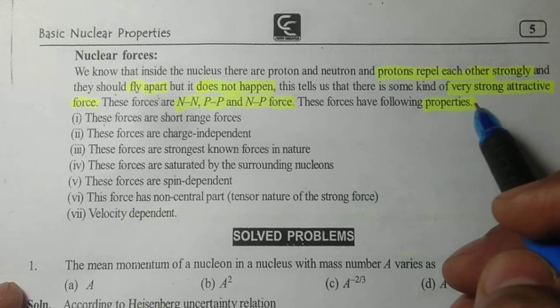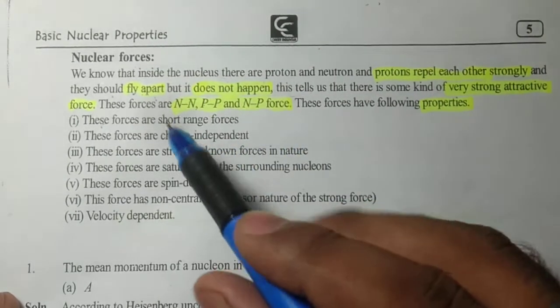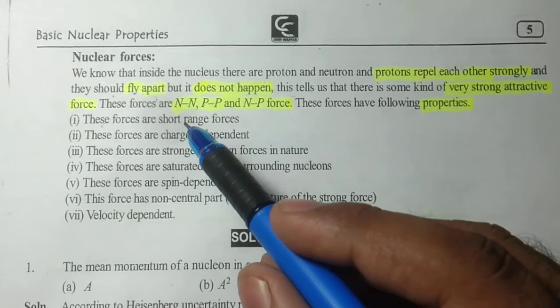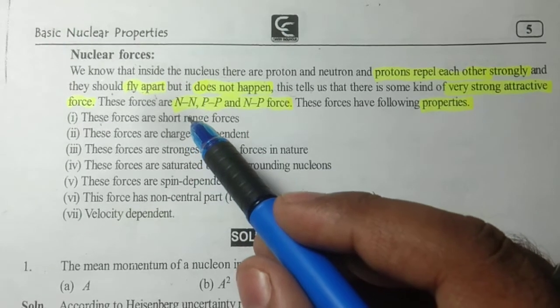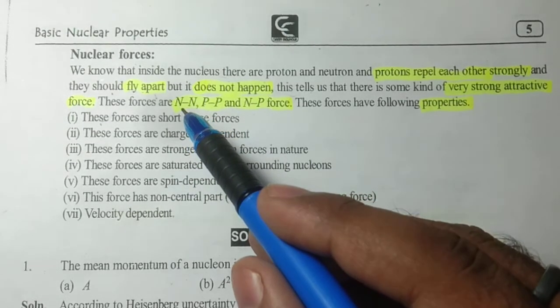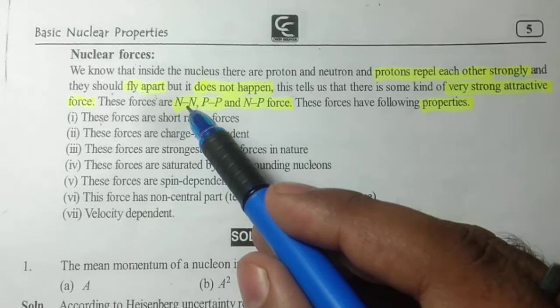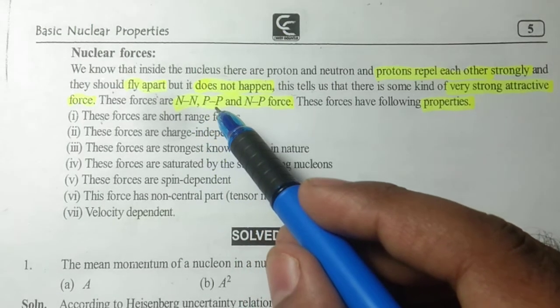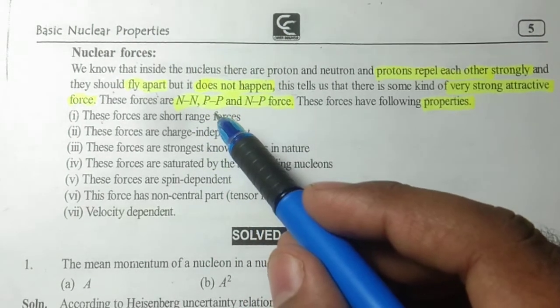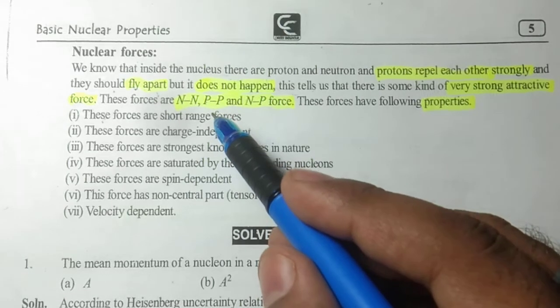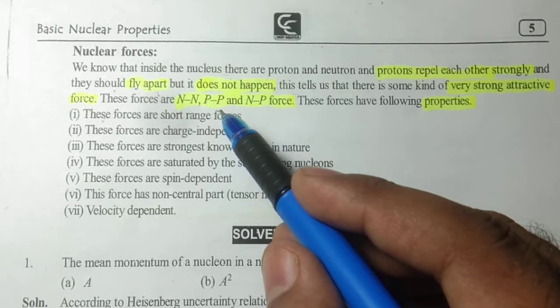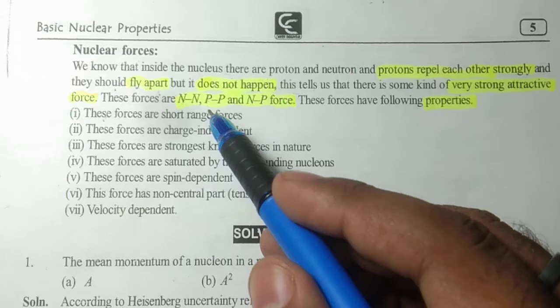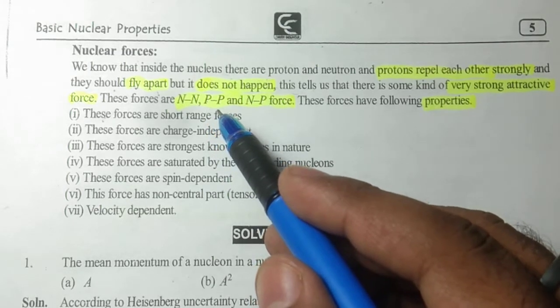These forces have following properties. Neutron-neutron always has attractive nature because in heavy nucleus a large number of neutrons exist. For proton-proton, at smaller distances there is attractive force, and at larger distances there is repulsive force.